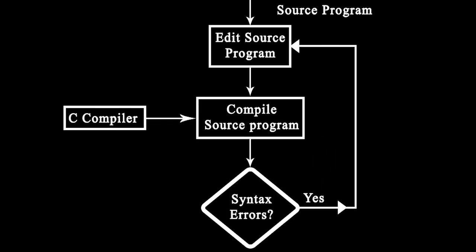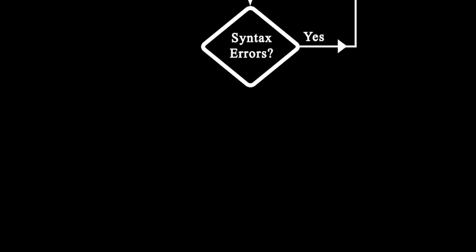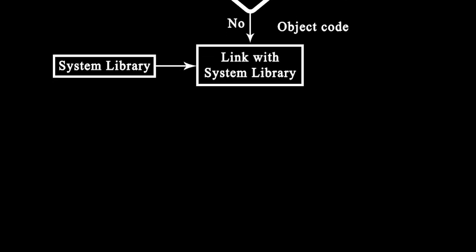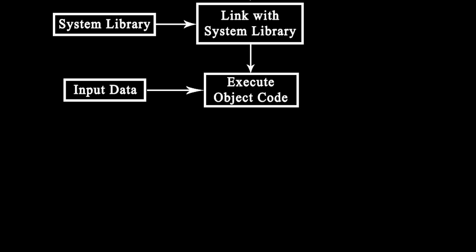If there are any syntax errors, I'll go back to the edit source program block where I'll check again if there is any error inside the program. If there are no errors, the compiler will link the system libraries to the program through the link section, and then I'll be executing my code.